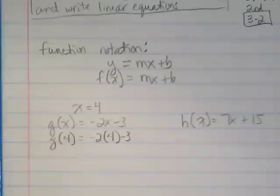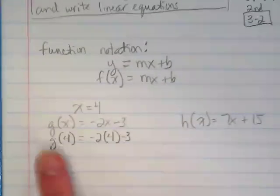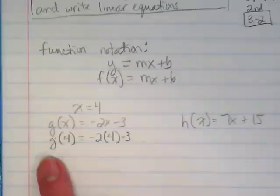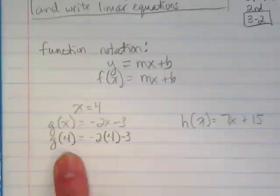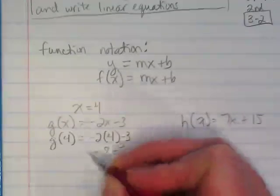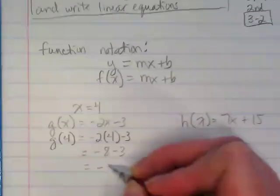So we just put input that 4 where we had an x in both places, yes? This side is our output and our input at the same time. We're saying we want to know what the output is when we put in a 4. So let's solve this. This would be negative 8 minus 3 equals negative 11.